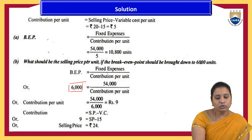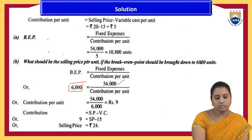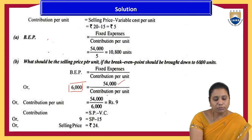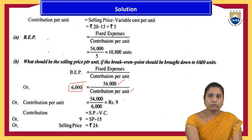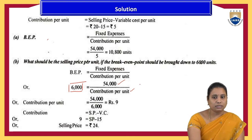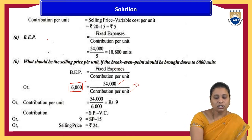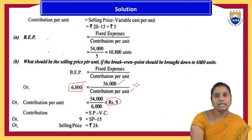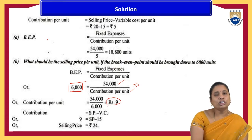We know that fixed expenses = 6,000 units × contribution per unit. So ₹54,000 ÷ 6,000 = contribution per unit of ₹9. We need to find contribution per unit, which has become ₹9.